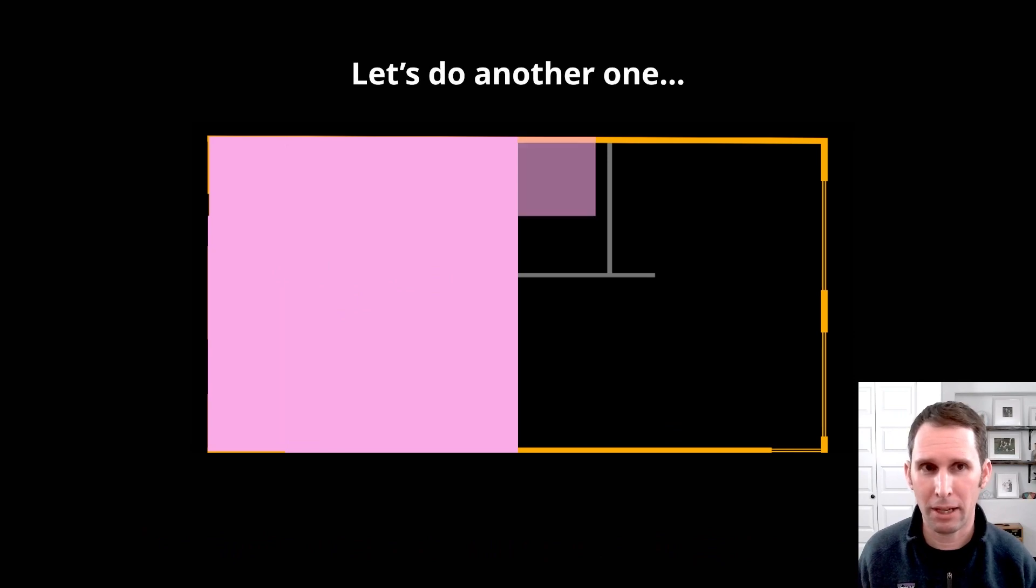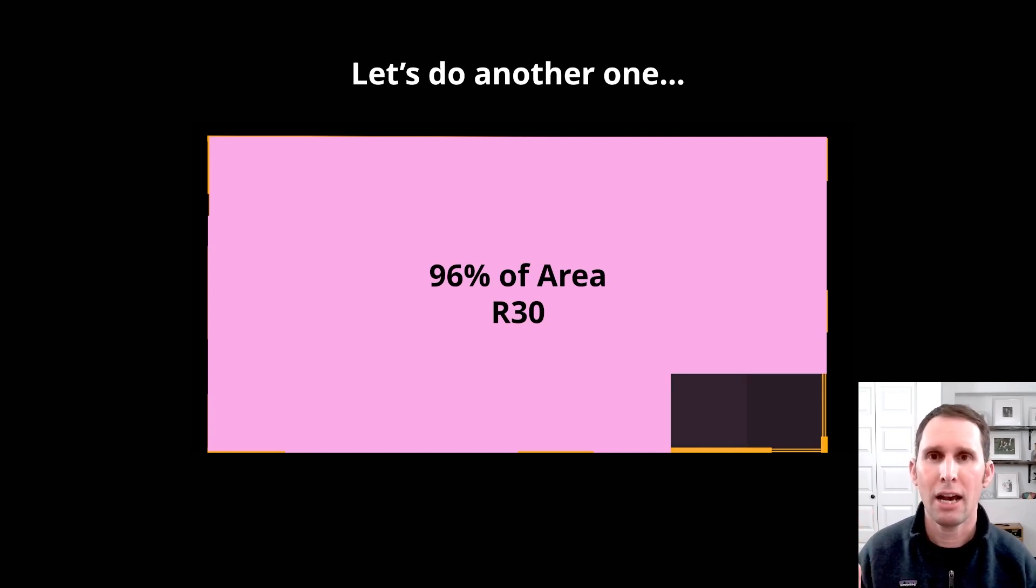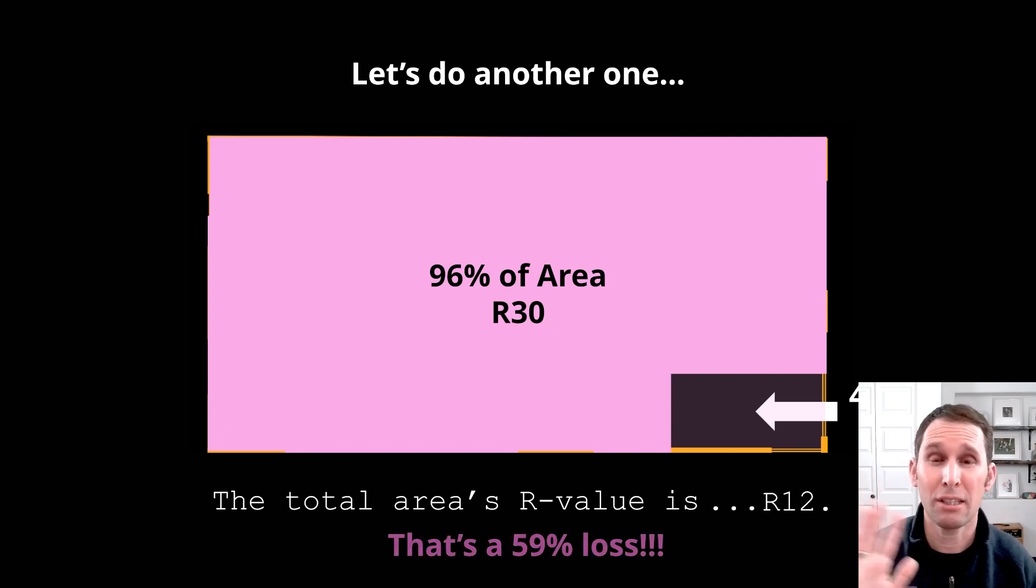Let's do another one. It'll make more and more sense as you look at more examples. So, imagine you have an attic that has 96% of the area of R30 and only 4% of the area having R1. What do you think the total average is? Well, some people would say, oh, well, you're probably losing 4%. Maybe it goes down to R25. In this case, the total area's R-value is only R12. That's a 60%, almost a 60% loss. So, again, heat travels the path of least resistance.